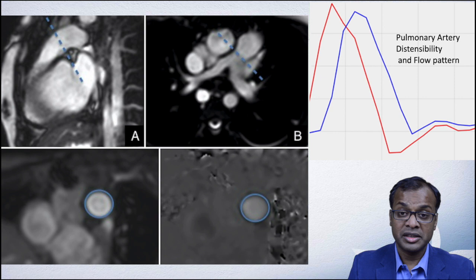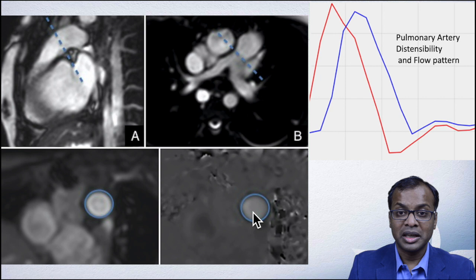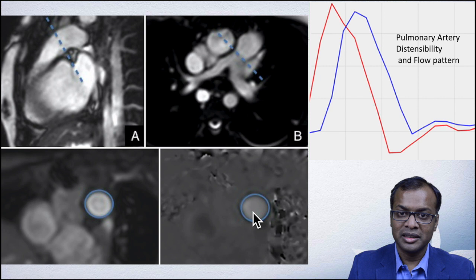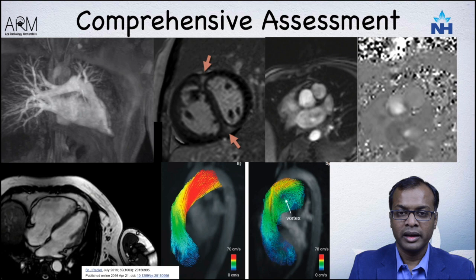This is what a phase contrast image looks like. You perform flow imaging at the level of the pulmonary artery, measure the circumference in diastole and in systole, and compare the arterial stiffness. Vessels that are highly stiff and non-collapsible are suggestive of an irreversible state of pulmonary hypertension, while vessels that collapse nicely suggest a reversible state and that patients can be taken for surgical correction.